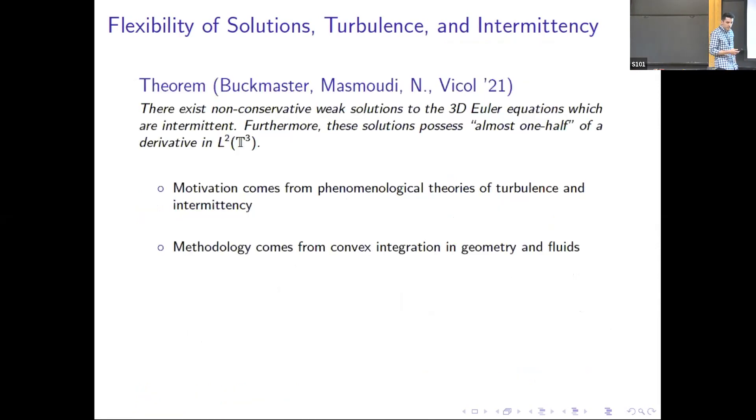The theorem that I'm speaking about today is joint work with Tristan Buckmaster, Nader Masmoudi, and Vlad Vicol. It says that we can construct non-conservative intermittent weak solutions to the 3D Euler equations. Non-conservative means that the kinetic energy is not conserved. Intermittent means these solutions possess almost one-half of the derivative in L^2. I'll tell you roughly what that means, but more importantly I should motivate why that's an interesting regularity threshold to think about.